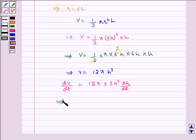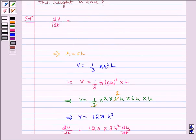Putting the value of dV/dt and h, we get 12 = 12π × 3h²× dh/dt, where h is given to us as 4.